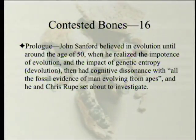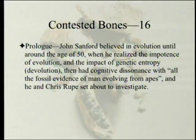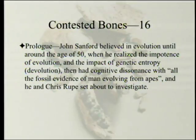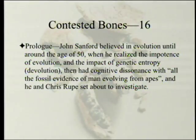To review where we've gotten so far: in the prologue, John Sanford believed in evolution until around the age of 50, when he realized the impotence of evolution and the impact of what could be called genetic entropy or devolution. Having decided that meant evolution was wrong and probably creationism was right, he shortened the time frame. He then had cognitive dissonance with supposedly all the fossil evidence of man evolving from apes.